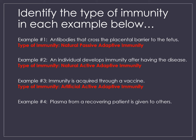Example four: plasma from a recovering patient is given to others. Is it active or passive? Does our body have to do work? The answer is artificial passive adaptive immunity — it's artificial because we didn't get it from a natural source, and it's passive because our body didn't have to do any work; we're simply receiving a gift of antibodies that come in the plasma.